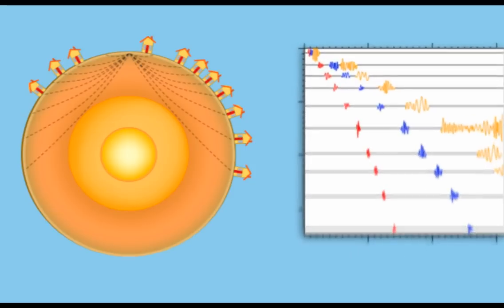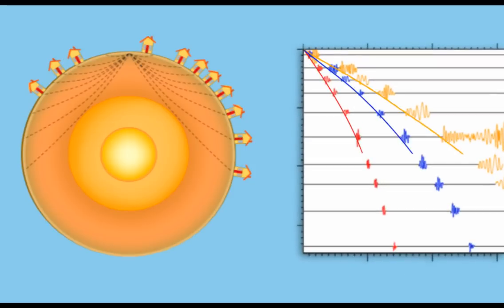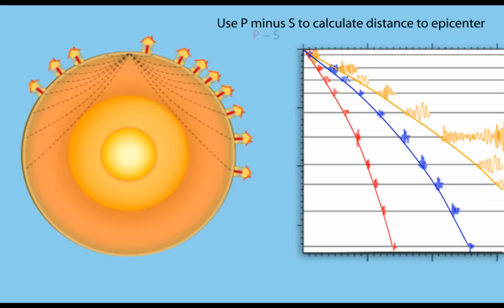Connecting the waves through the stack of seismograms creates the travel time curves that can be used to locate earthquakes. Simply stated, the time difference between the arrival of the P wave and the arrival of the S wave can be used to measure the distance from the seismometer to the epicenter.